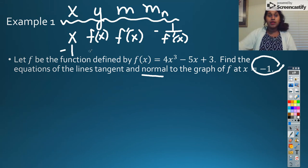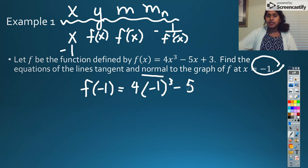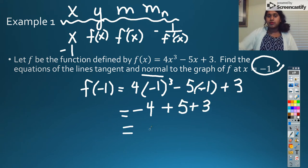And then I can go ahead and figure out what f of negative 1 is by plugging that in to the original equation. That becomes 4 times negative 1 cubed minus 5 times negative 1 plus 3. Negative 1 cubed comes back as a negative. So that becomes negative 4. Negative 5 times negative 1 becomes positive 5 plus 3. Well, negative 4 plus 5 is 1, 1 plus 3 is 4. So this means f of negative 1 equals 4. That's my y value.